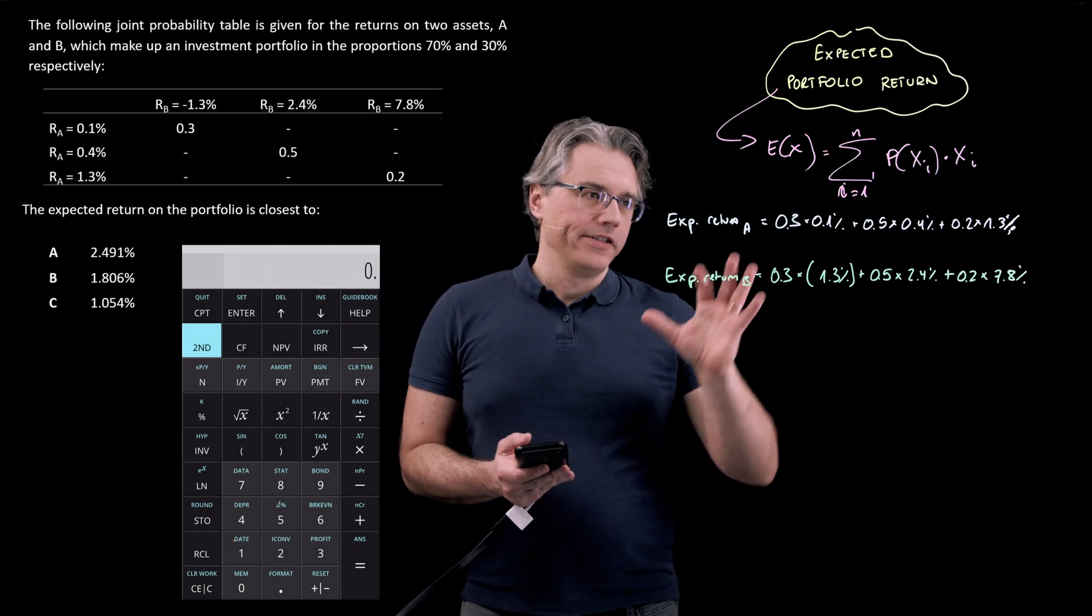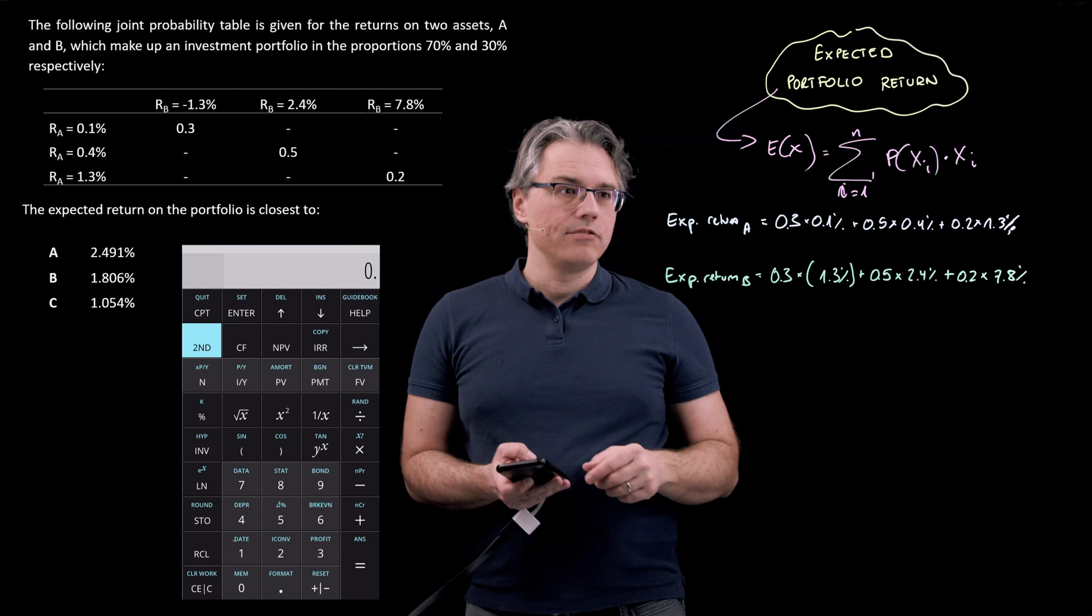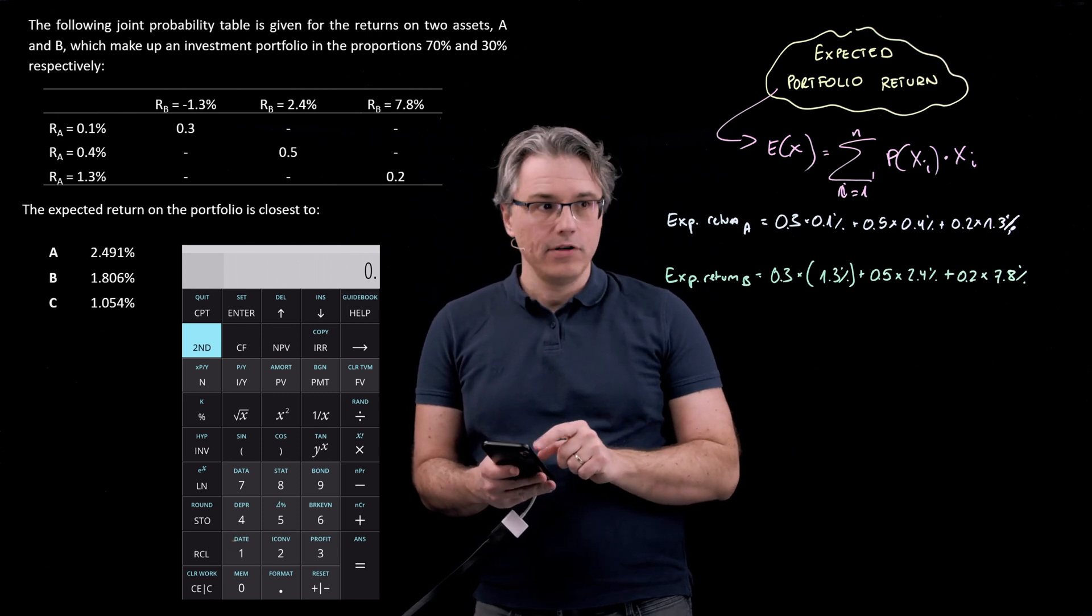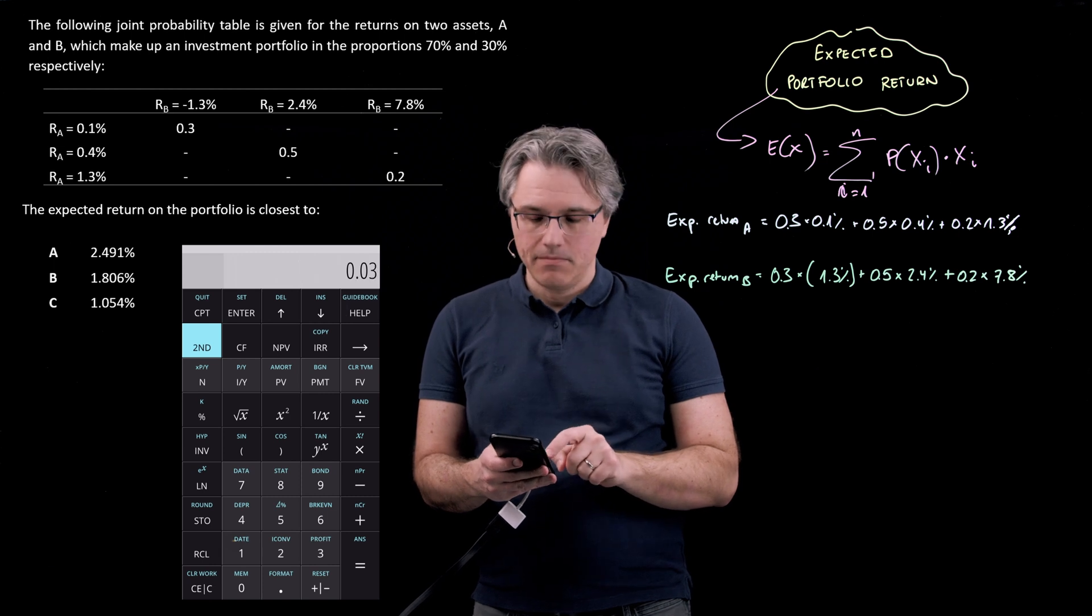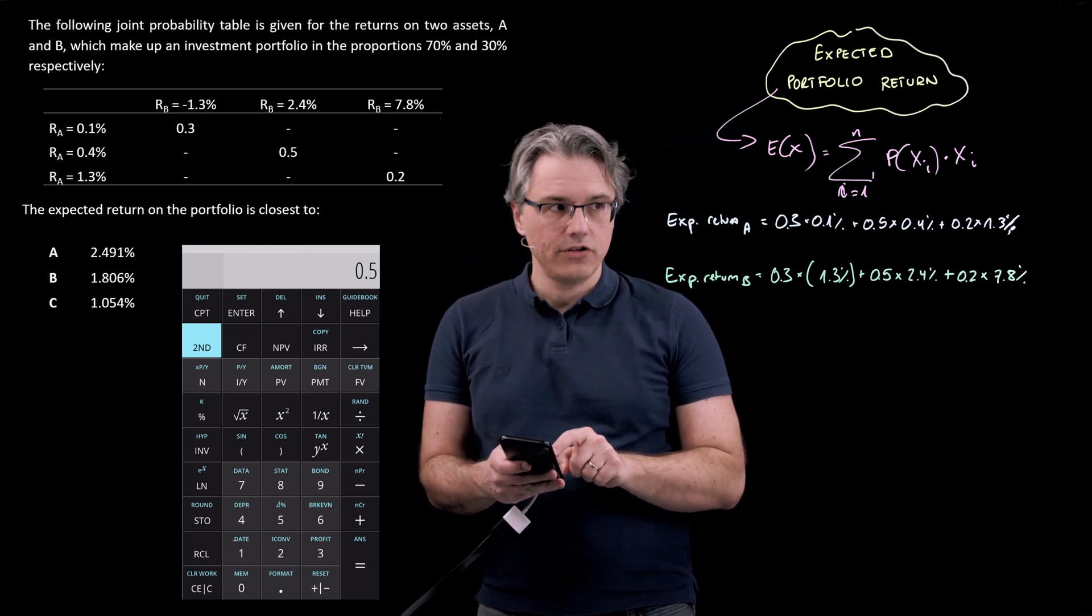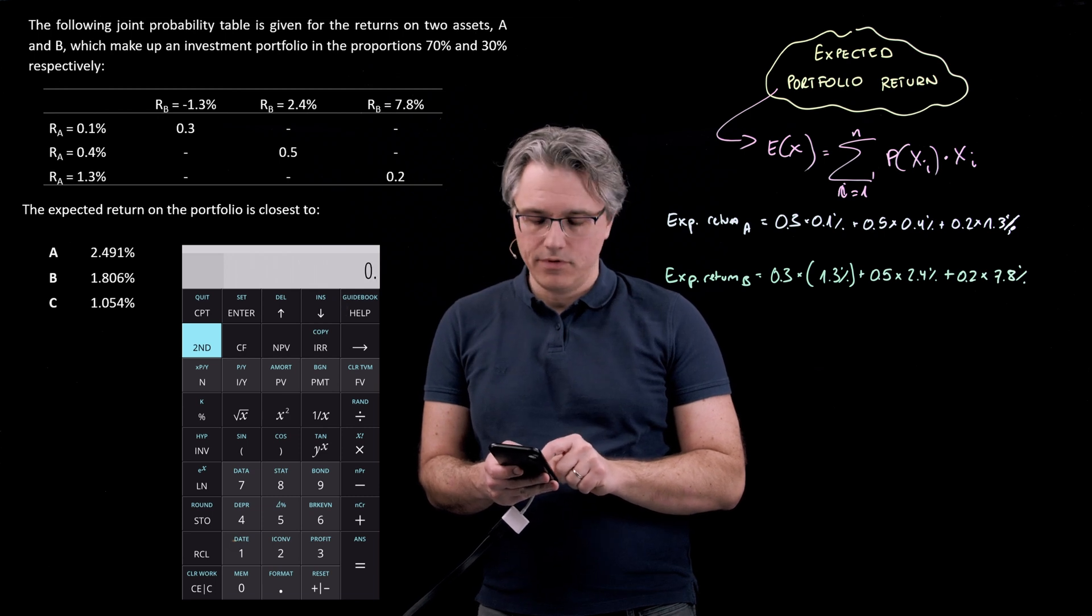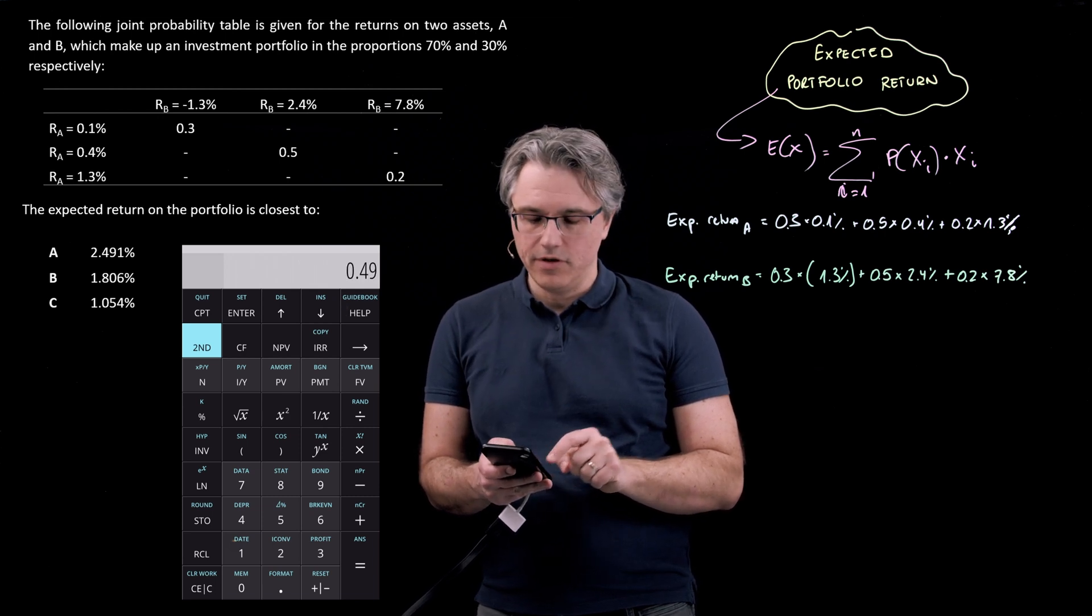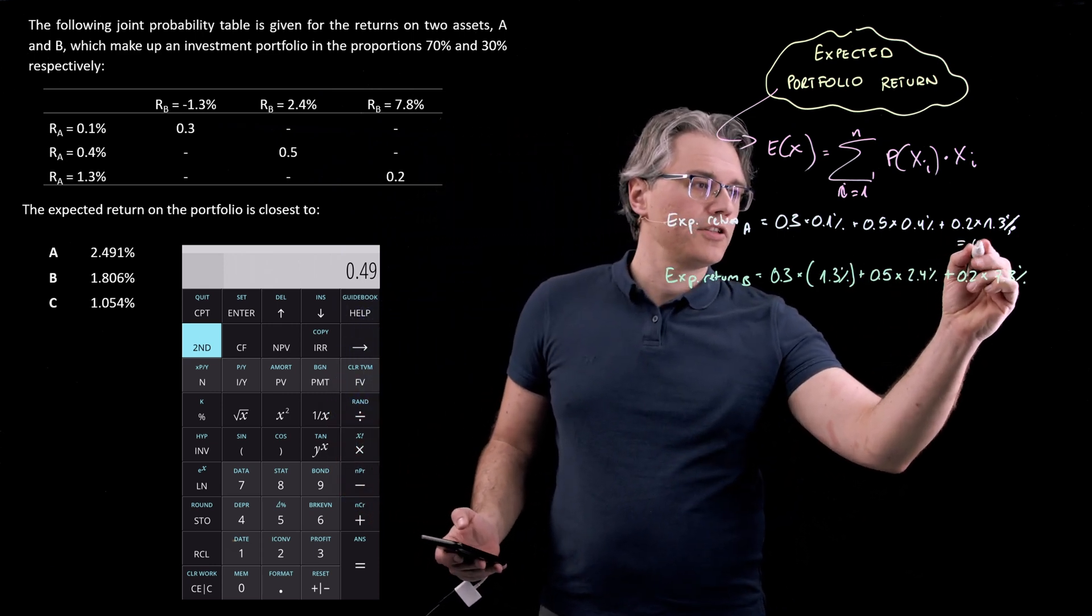Okay, I've got my calculator fired up. So now it's just a question of inputting the data. For the expected return on asset A, we've got 0.3 times 0.1 plus 0.5 times 0.4 plus 0.2 times 1.3. And that gives an expected return of 0.49%.